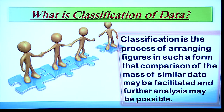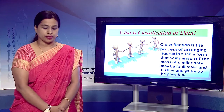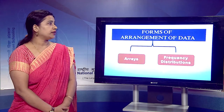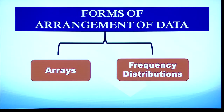Once data is collected — whether primary or secondary — if it is not organized, we cannot use it, so we need to arrange it through classification. Classification is the process of arranging figures in such a form that comparison of the mass of similar data may be facilitated and further analysis may be possible. Data can be arranged in two ways: array and frequency distribution.